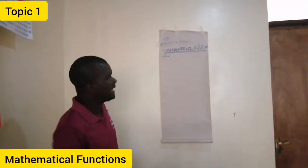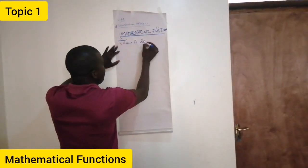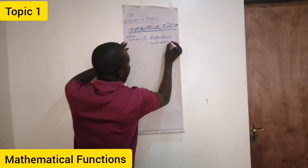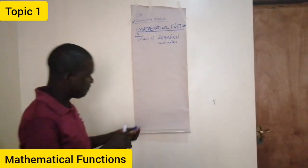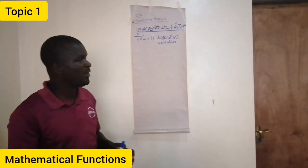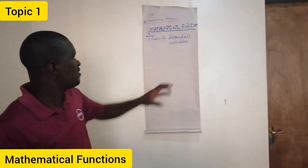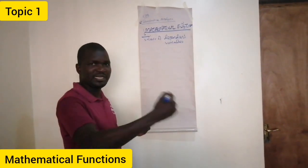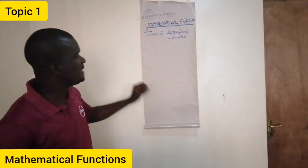What do we mean by this? The values of dependent variables are determined by the values of one or more independent variables. The dependent variable will always be one, while independent variables can be one, two, or more. So we have a relationship involving a dependent variable and one or more independent variables.